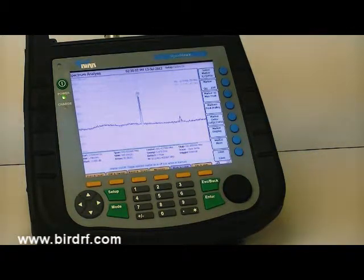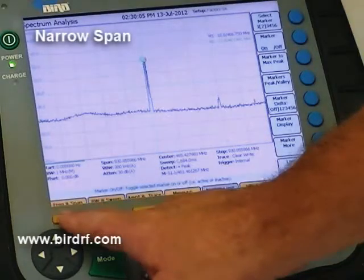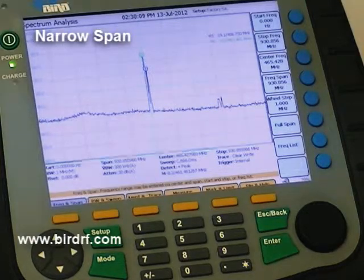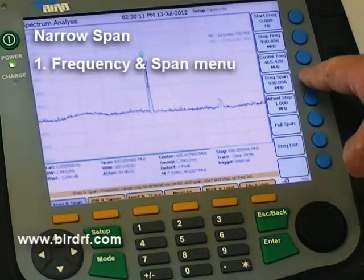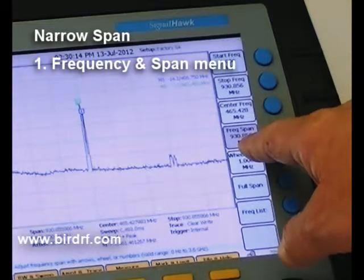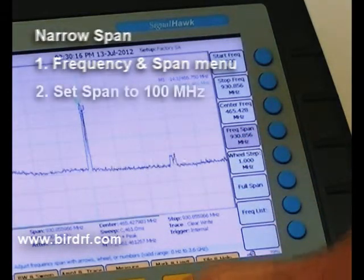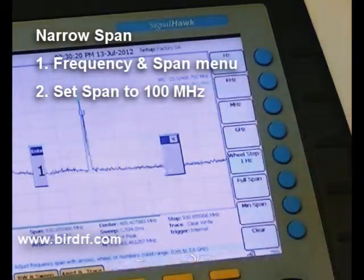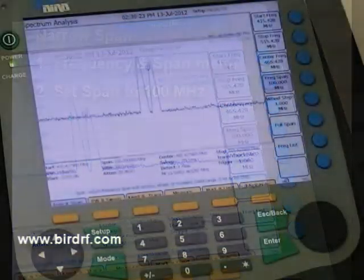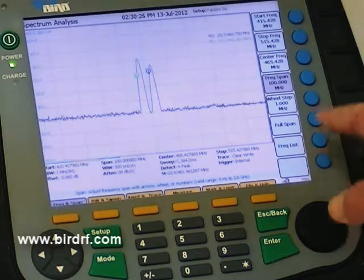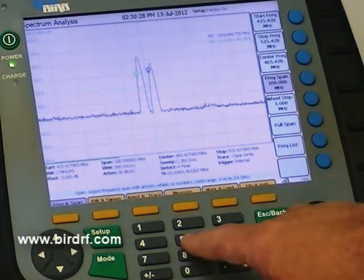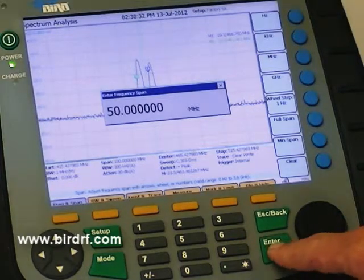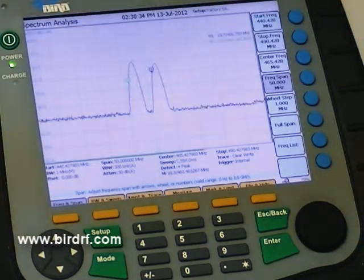In order to move these apart a little bit, I would need to narrow my span. So I would go to my Frequency and Span menu and I have a very wide span. If I set that to 100 MHz, it should give me a little bit of separation. I can take this down to 50 MHz and move them apart a little bit more.